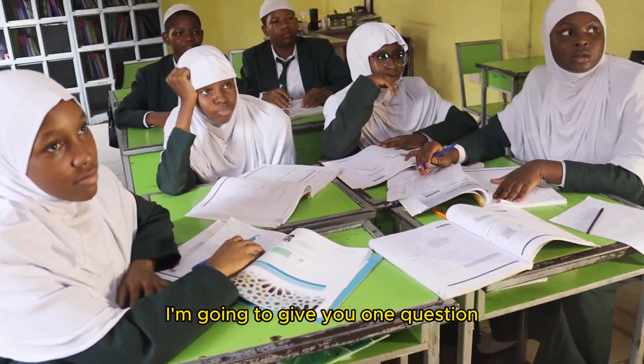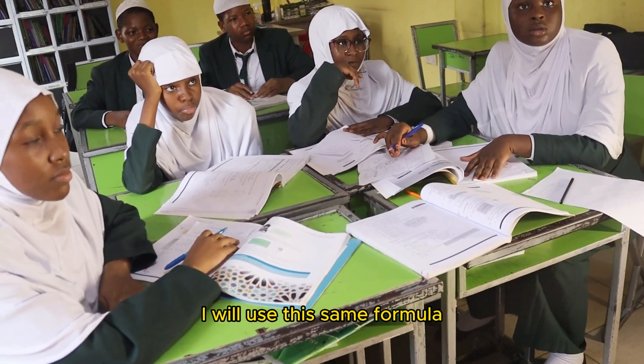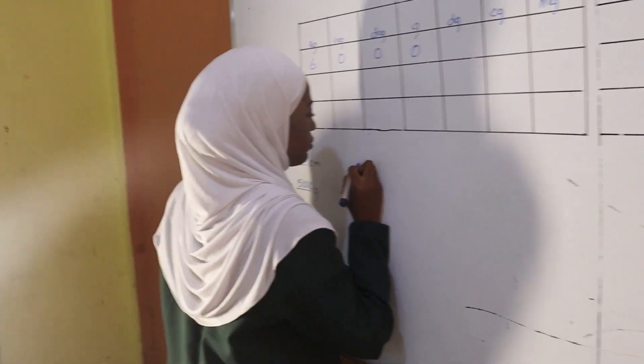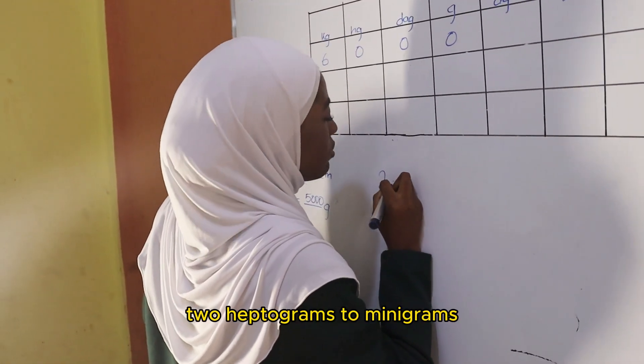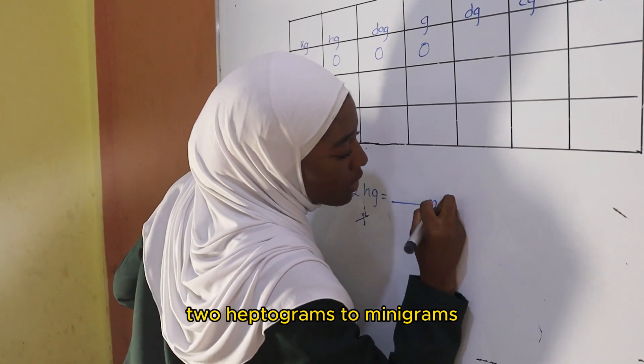So first of all, you also had a problem with this. I'm going to give you one question and you will use this same formula just to see if you understand. I want you to convert 2 hectograms to milligrams.